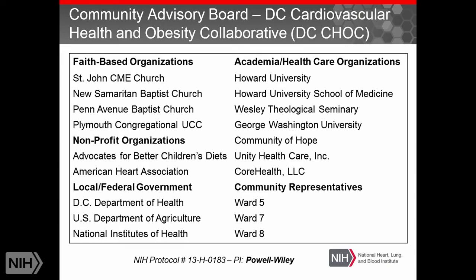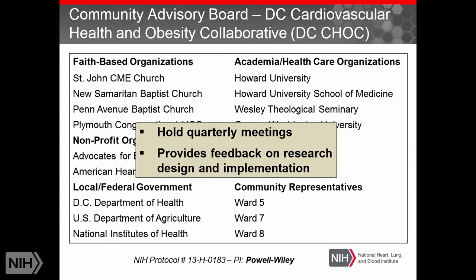From our partnership building, we developed a community advisory board called the D.C. Cardiovascular Health and Obesity Collaborative. This involved members from faith-based organizations, nonprofit organizations, local and federal government leaders, academic and health care organizations, and representatives from each of the target wards. After about a year and a half of developing partnerships, we began quarterly meetings with our advisory board to discuss what type of initial project we could develop and how it could be implemented in the target community.